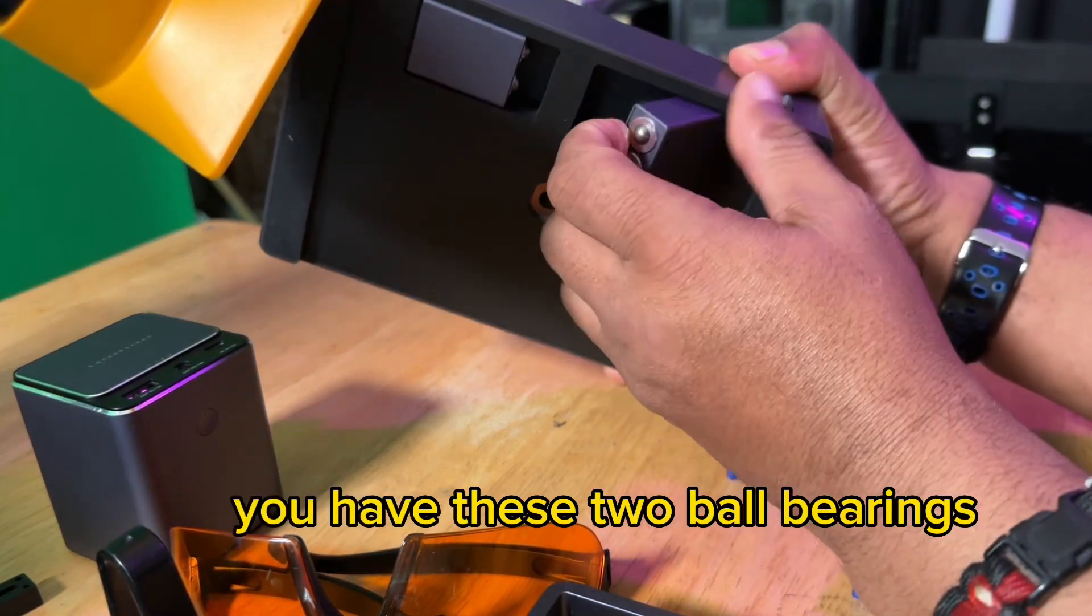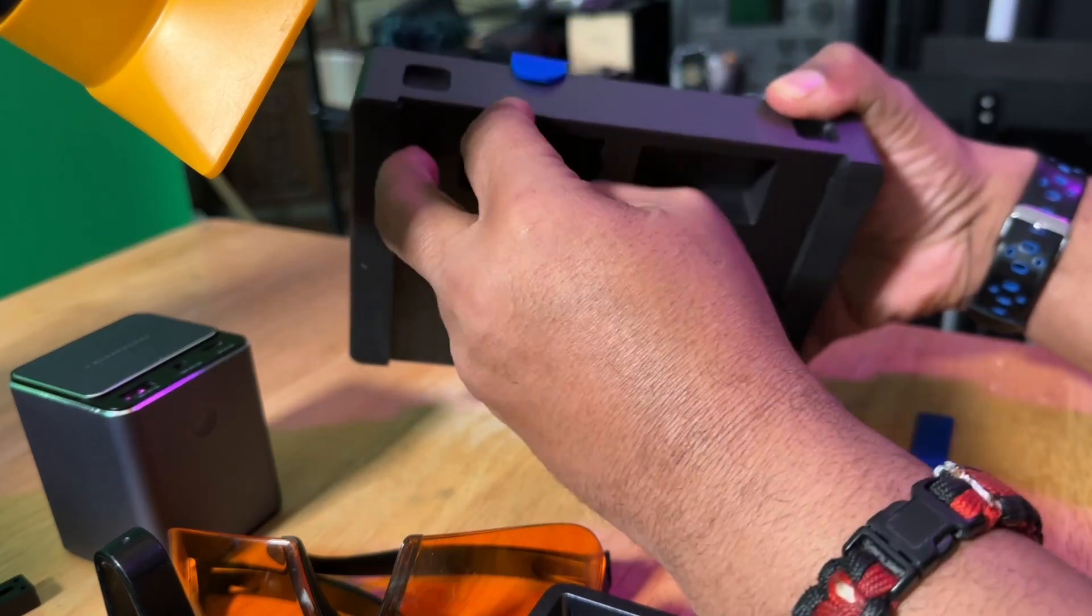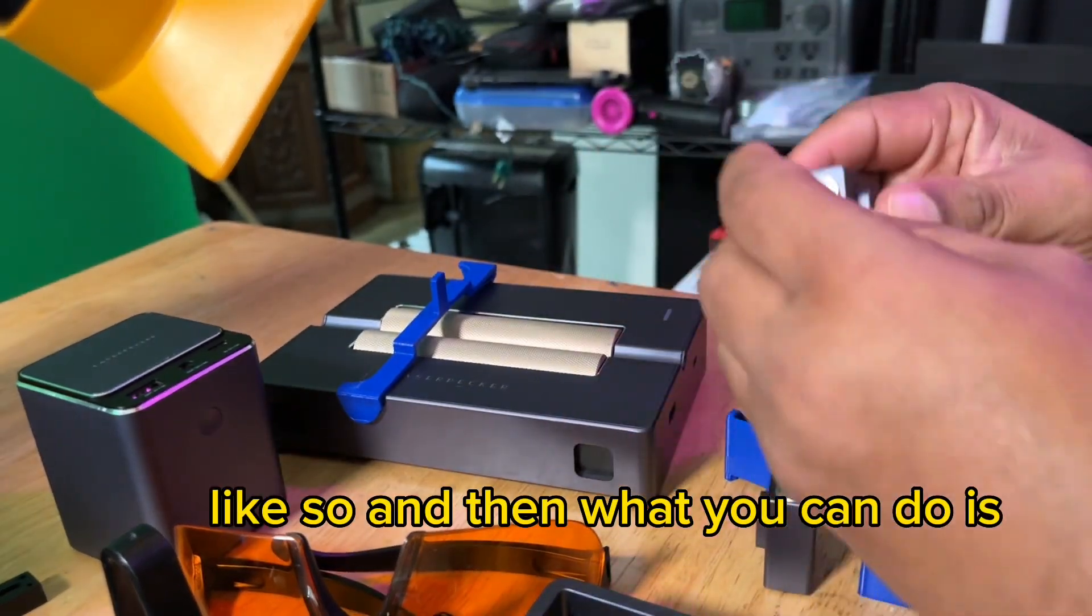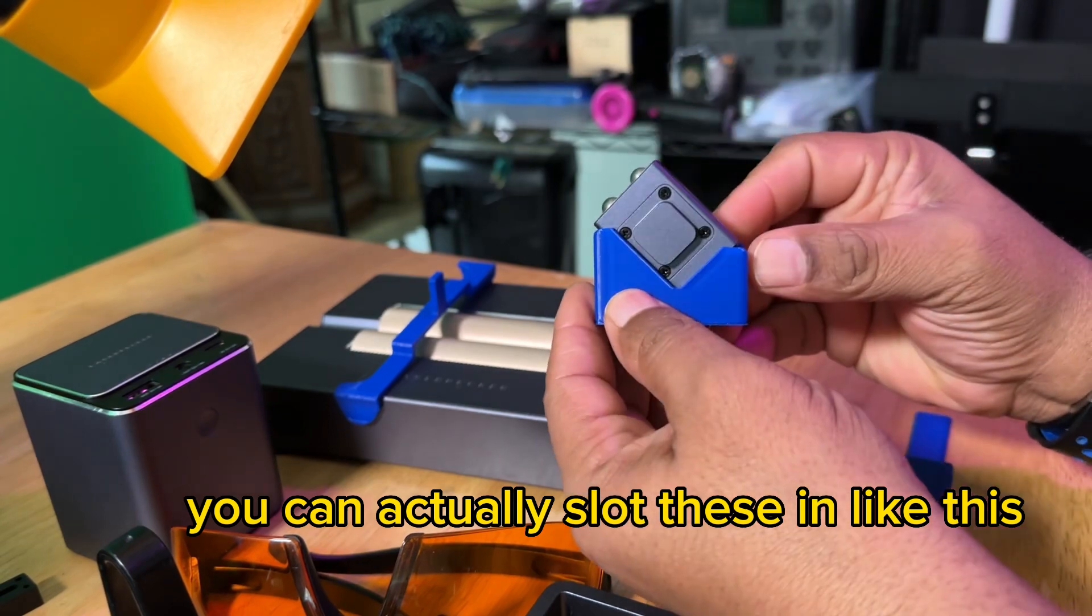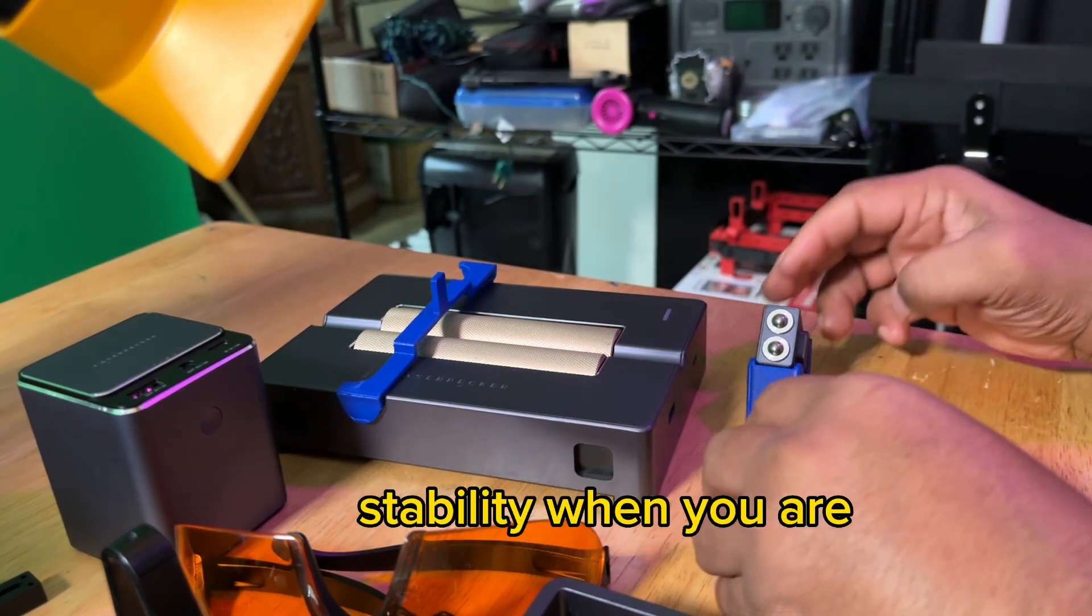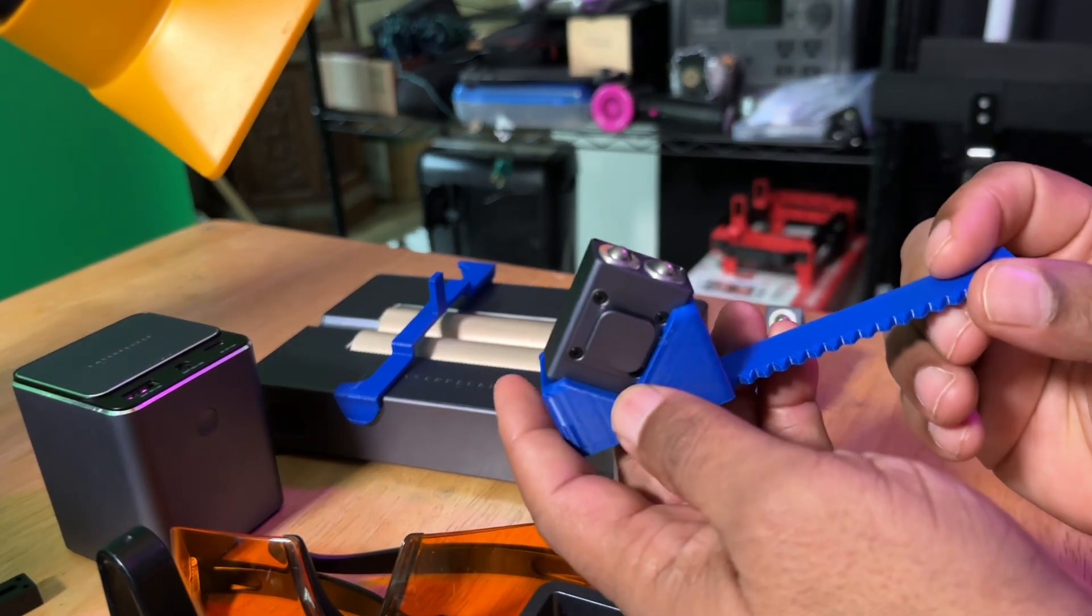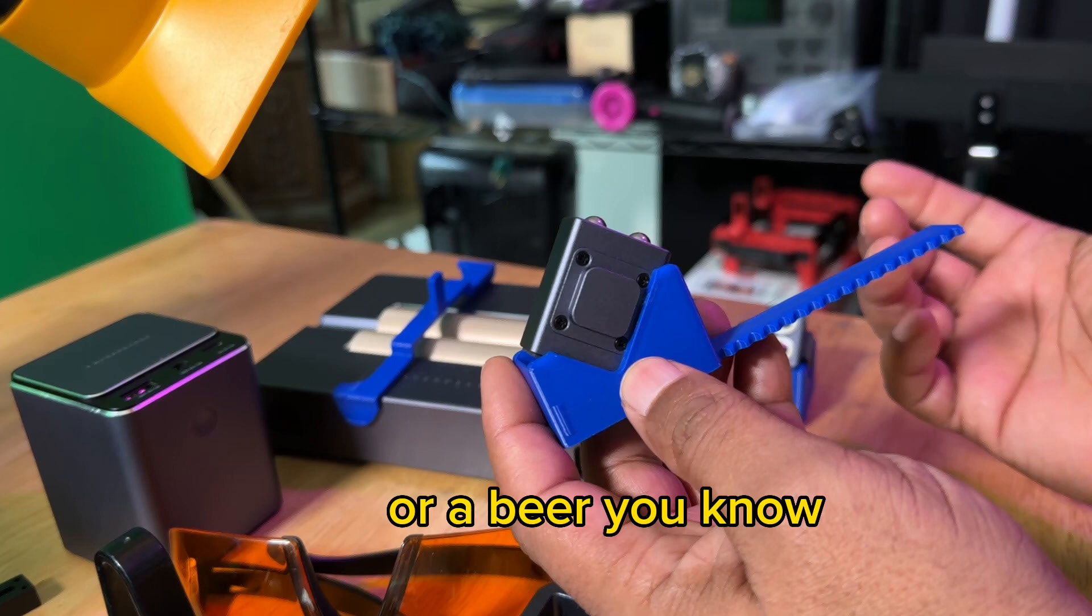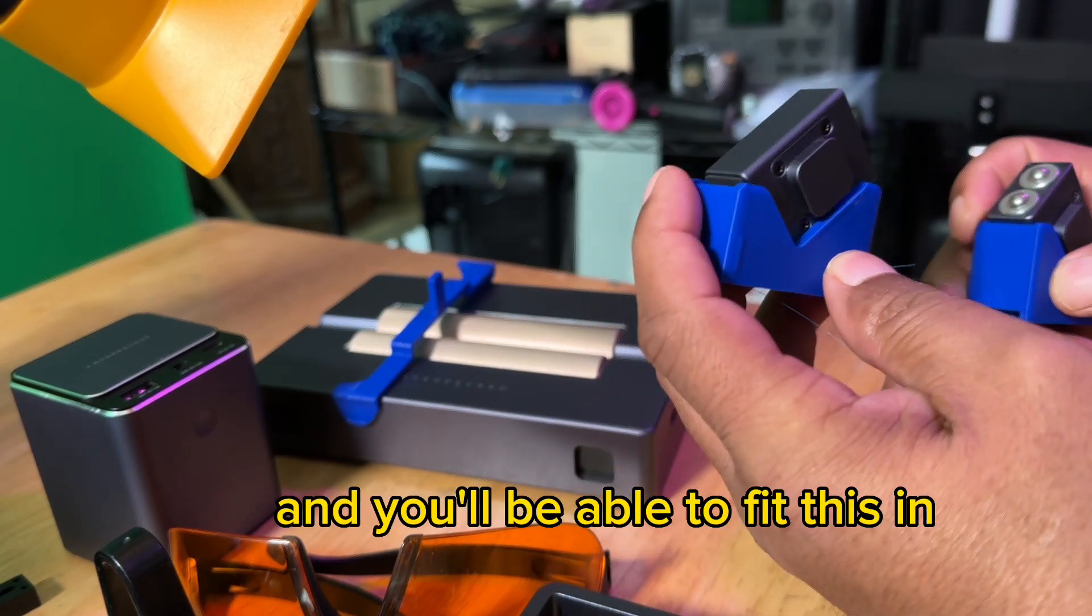Underneath here, you have these two ball bearings, and you can take those out like so. And then what you can do is you can actually slot these in like this. And then this is going to give you a little bit more stability when you are engraving on something like glass or a beer glass or something like that, that's round. And you'll be able to fit this in.